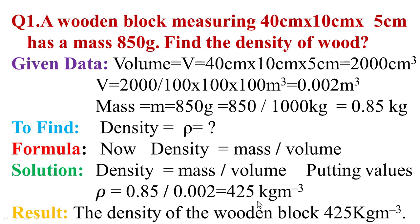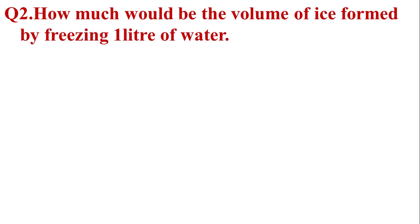The density of the wooden block is 425 kg per m³. Now, in the second question: how much would be the volume of ice formed by freezing of 1 liter of water?